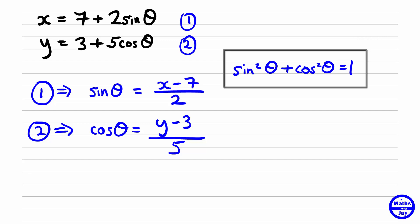So we've got sine theta squared, so that's all of x minus 7 over 2 squared. So we'll put the whole lot in brackets. And then we've got cos theta squared, so we want to put the y minus 3 over 5 in brackets there and square it, and then that's equal to 1.